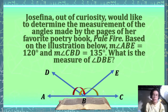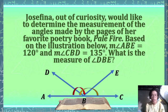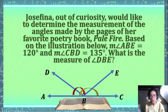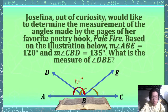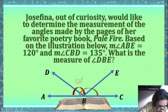For our second problem, we have Josefina who, out of curiosity, would like to determine the measurement of the angles made by pages of her favorite poetry book, Pale Fire. Based on the illustration below, the measurement of angle ABE is equal to 120 degrees.